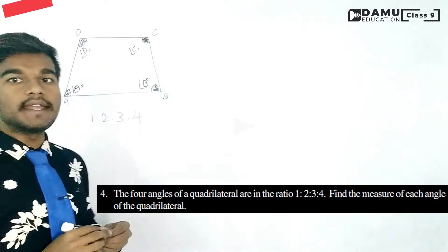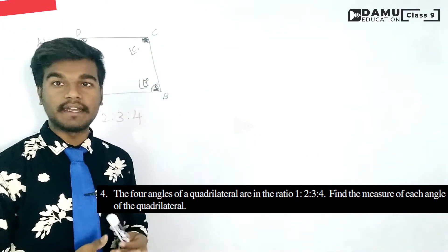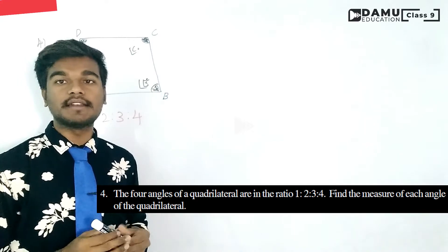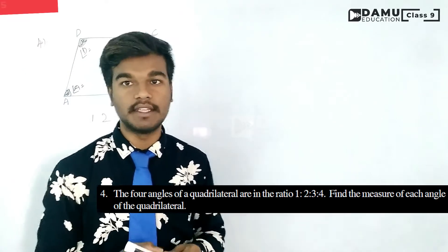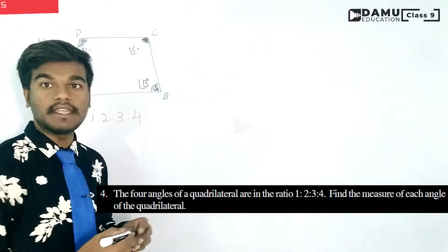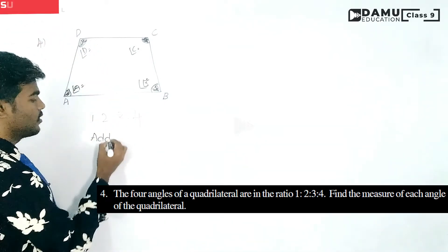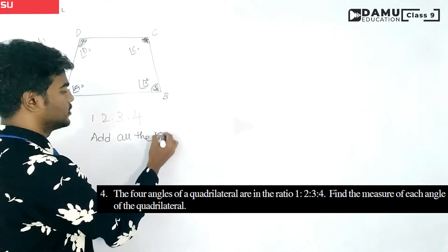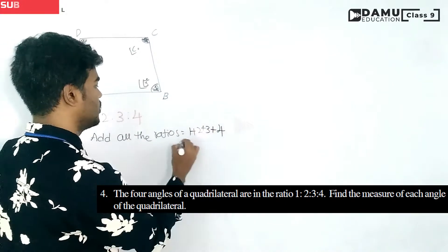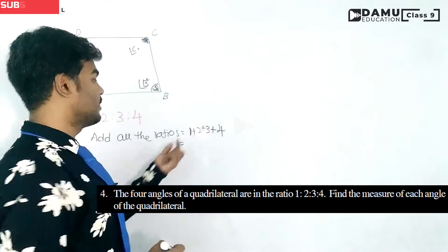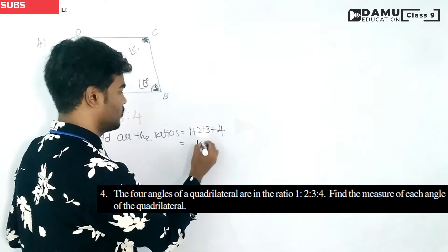The ratios of the angles are 1 is to 2 is to 3 is to 4. Ratio means comparing any two quantities. We multiply a constant with each ratio value. First, let's add all the ratios: 1 plus 2 plus 3 plus 4. That gives us 3, then 6, then 10. The total is 10.